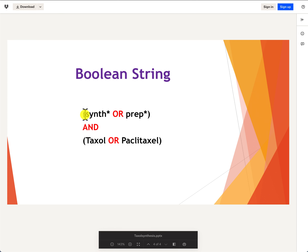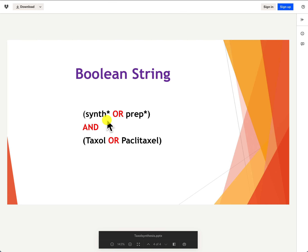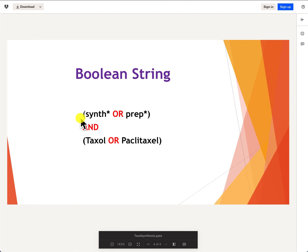I've described synthesis as 'synth*' and 'prep*' — the asterisk is sometimes referred to as a truncation term. It truncates the keyword so that the database finds all different variants. With 'synth*,' all characters after the 'h' are covered, so the database will retrieve synthesis, synthesizing, synthetic, and so on.